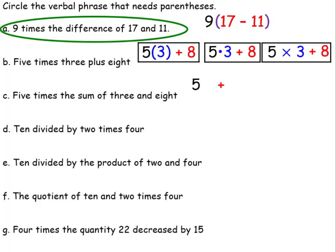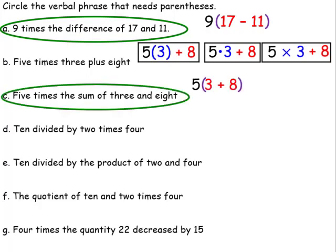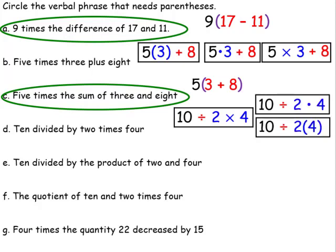'Five times the sum of three and eight' — in this case, it's five times the sum. We can't multiply five times a plus sign, so we're finding the sum of three and eight. This one we will circle. 'Ten divided by two times four' could be written multiple ways without parentheses, so that one will not be circled.